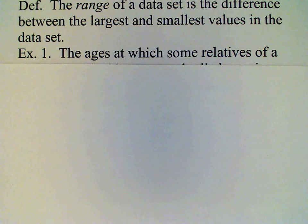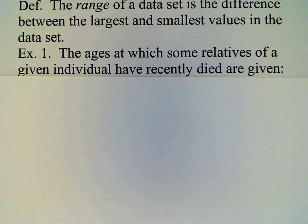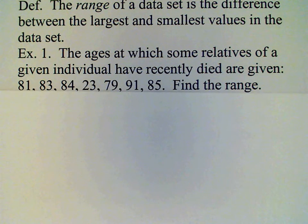For example, we're given the ages at which some relatives of a given individual have recently died. Those ages are 81, 83, 84, 23, 79, 91, and 85. We need to find the range.